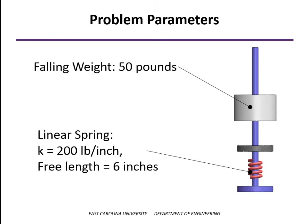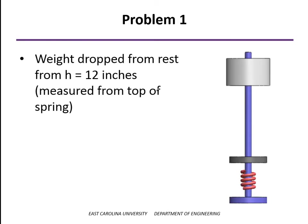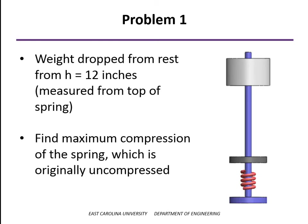We're going to look at a couple of variations of this problem. In the first one, we're going to drop the weight from rest from a height of 12 inches above the top of the spring, actually above the top of the plunger that the spring is attached to. And what we want to find is the maximum compression of the spring. So originally the spring is at its free length. We drop the weight on it and we want to see how much the spring is going to compress.